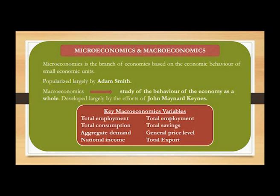The key word for microeconomics is small economic units. The techniques of microeconomics were popularized largely by Adam Smith. Macroeconomics, on the other hand, is the study of the behavior of the economy as a whole. It covers variables like total employment, total savings, aggregate demand, general price level, national income, etc. The key word here is aggregate level — macroeconomics takes the economy as a whole. This branch was developed largely by the efforts of John Maynard Keynes.